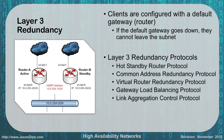Layer 3 redundancy is another approach — redundancy at how we route our traffic. Clients are configured with a default gateway, which is a router, and if that gateway goes down, they won't be able to get out of the subnet. Instead, we use protocols like HSRP (Hot Standby Router Protocol) to address a virtual router that routes to active or standby routers. Other options include CARP (Common Address Redundancy Protocol), VRRP (Virtual Router Redundancy Protocol), GLBP (Gateway Load Balancing Protocol), and LACP (Link Aggregation Control Protocol).